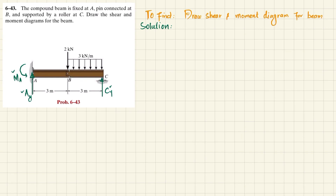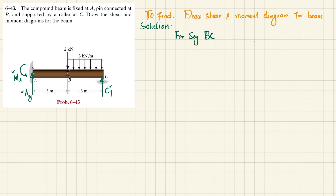We will find C_Y, A_Y, and M_A using equilibrium conditions. This beam is a compound beam pinned at point B, so we treat it as two segments: segment BC and segment AB, and we will treat them separately. First, we will draw the free body diagram for segment BC.